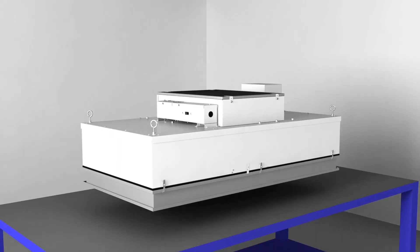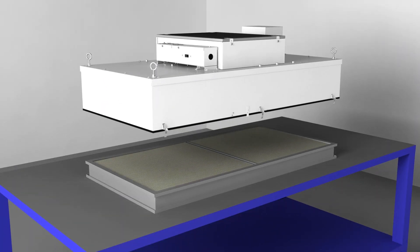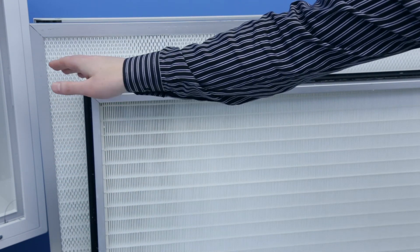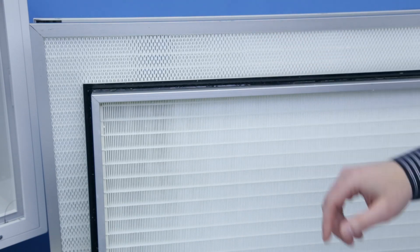Plenum-top replaceable units must be removed from the ceiling in order to replace the filter. Plenum-top replaceable filters have 25% more filter area, which allows for higher airflow rates.